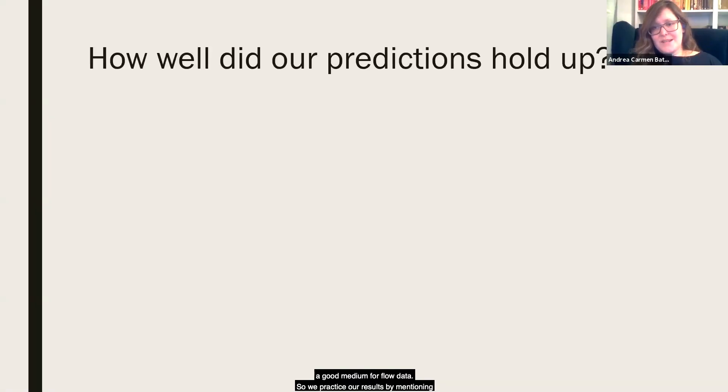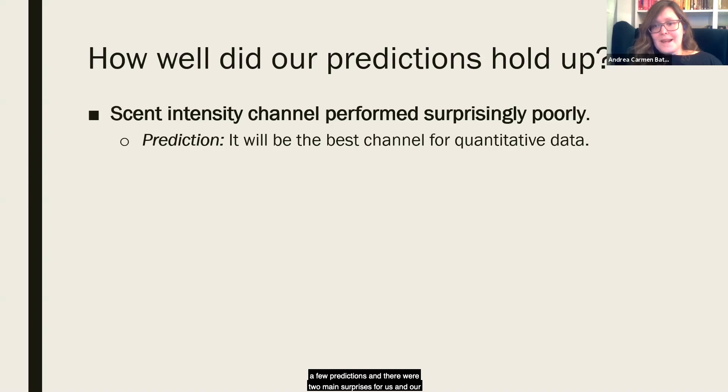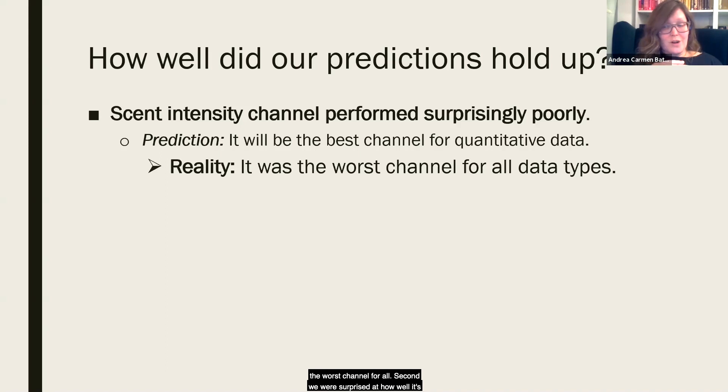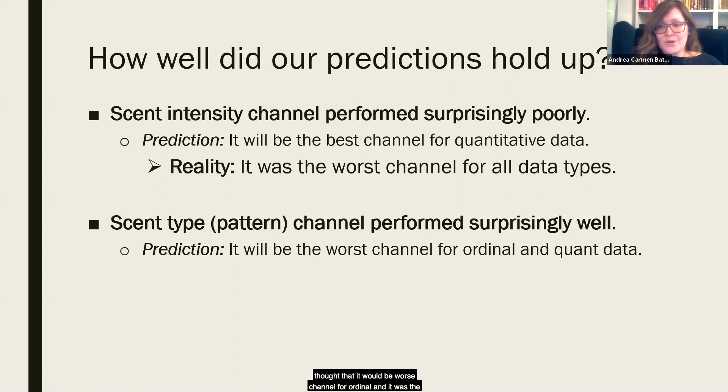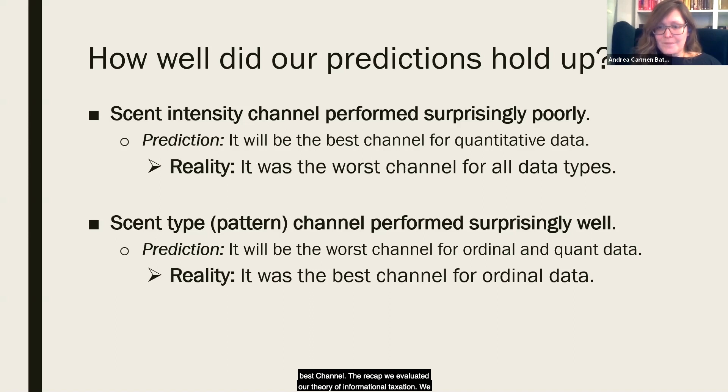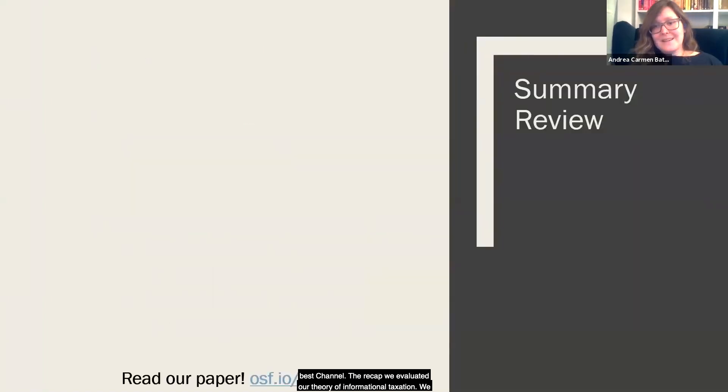So we prefaced our results by mentioning a few predictions, and there were two main surprises for us in our results. First, the scent intensity did worse than we expected. We thought that scent intensity would be the best channel for interpreting quantitative data, but it turned out to be the worst channel for all data types. Second, we were surprised at how well scent type, or that is to say the pattern channel, performed. We thought that it would be the worst channel for ordinal and quantitative data, but it wasn't. In fact, it was the best channel for ordinal data. And we predicted that it would be the best for nominal data, and that prediction did wind up being true.